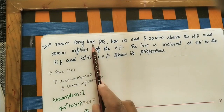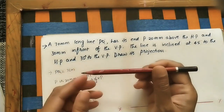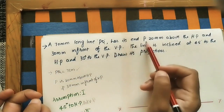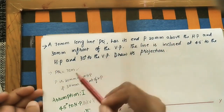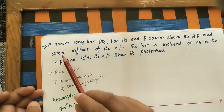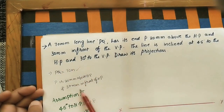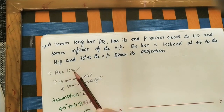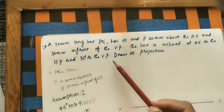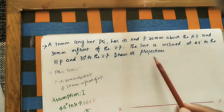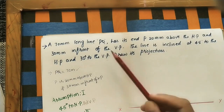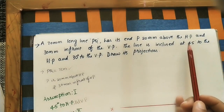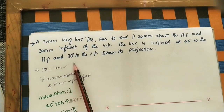Now let's take the given data. The line PQ is 70 mm long. End P is 20 mm above HP and 30 mm in front of VP. The line is inclined at 45 degrees to HP and 30 degrees to VP. We need to draw its projections — the front view and top view of line PQ.